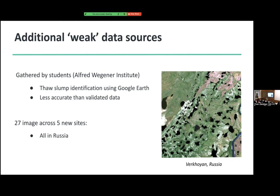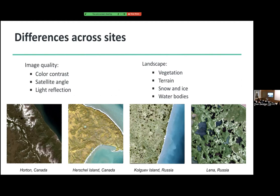On the right, you can see an example picture. The largest problem I have are the differences across sites. Those are my four main sites, and as you can see there are a lot of differences: first in image quality, color contrast, satellite angle, light reflection, but also the landscape — the vegetation, the terrain, mountains, snow and ice, and water bodies like the ocean and lakes. The Lena site is a sort of river delta, so there's a lot of water that makes it very difficult for a model to generalize between those sites.